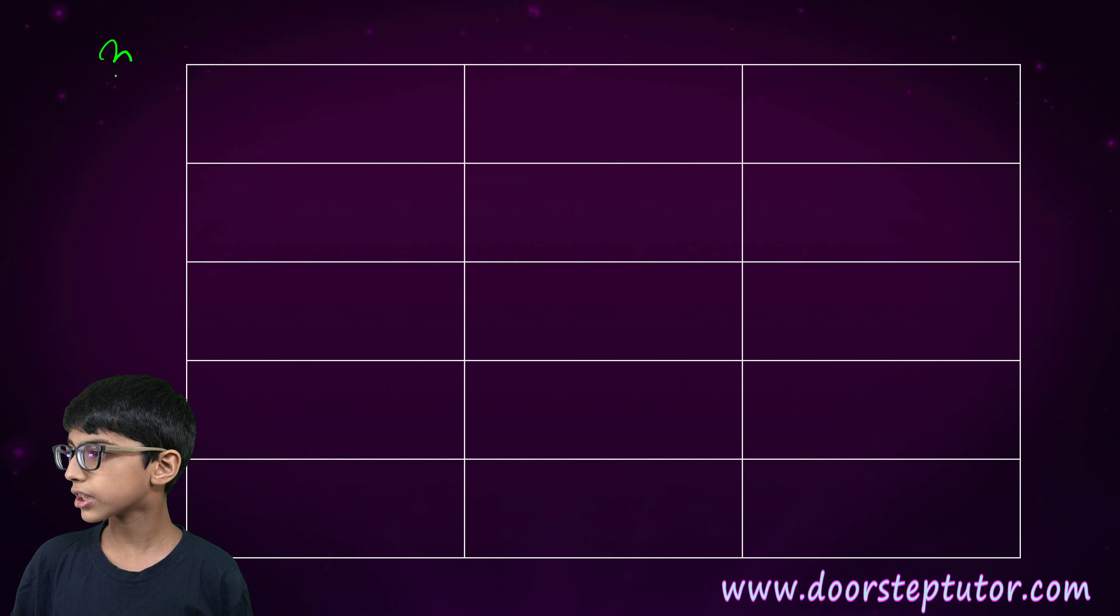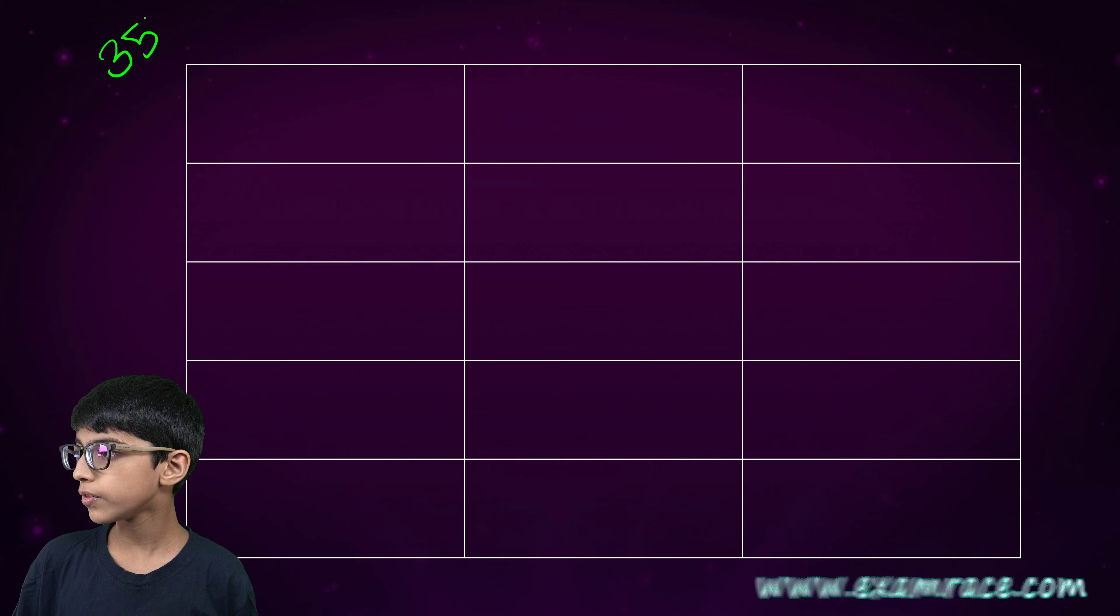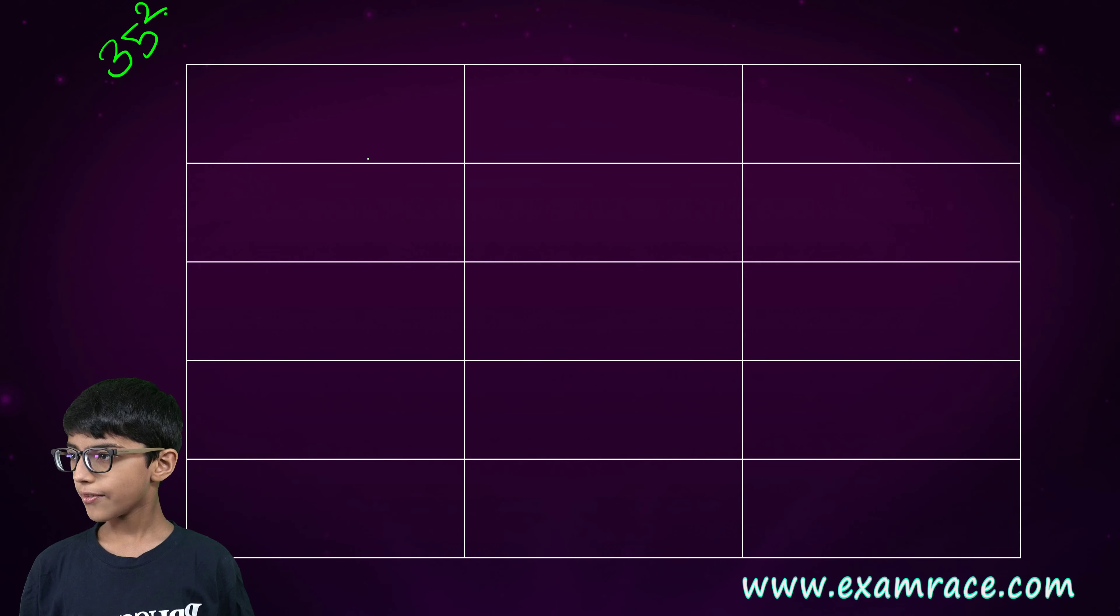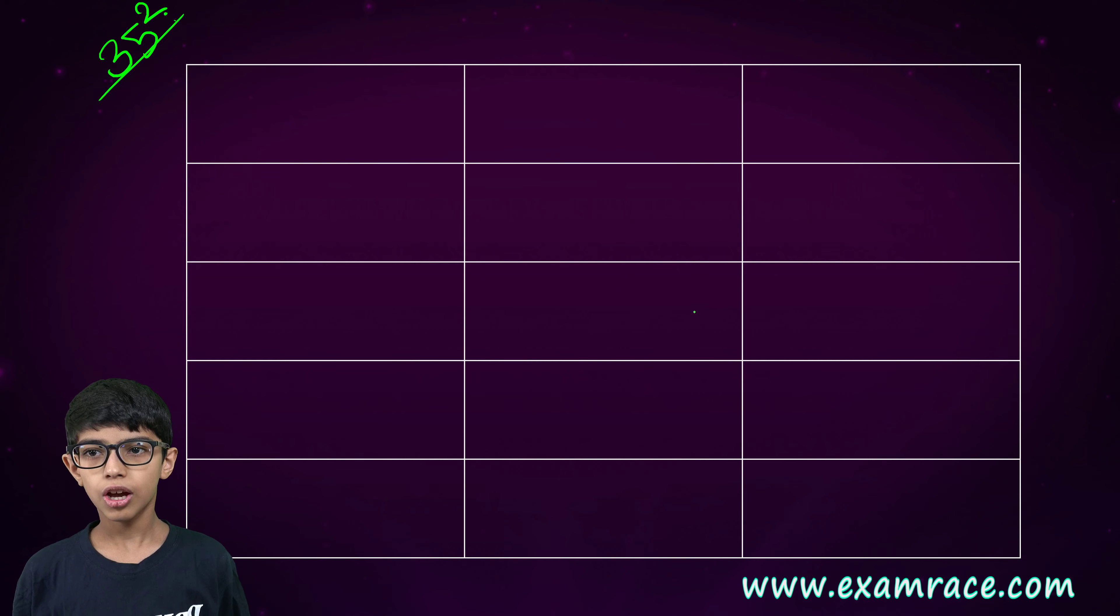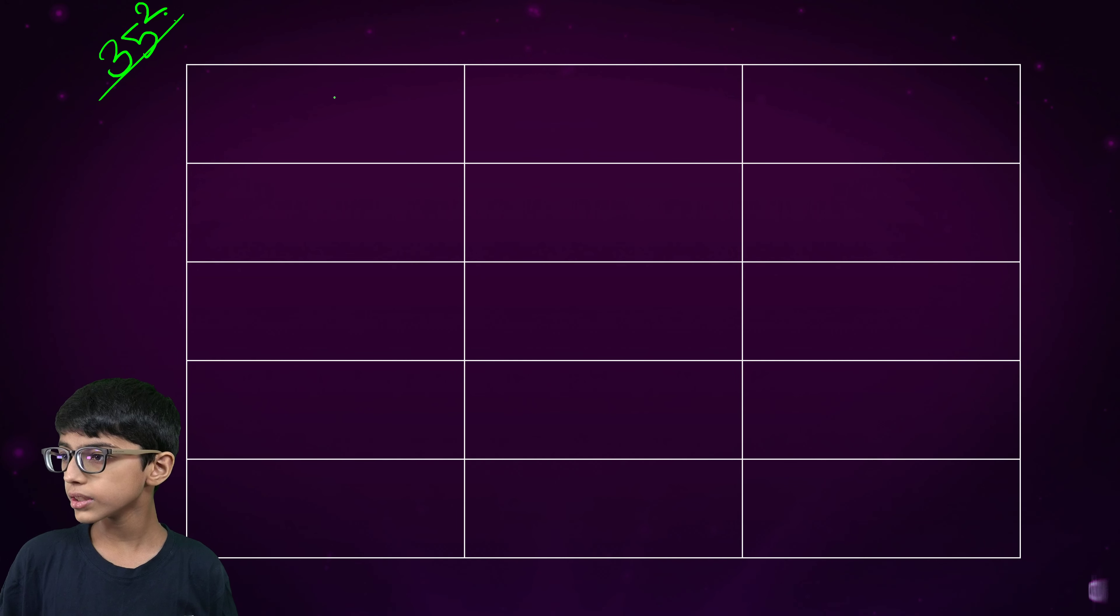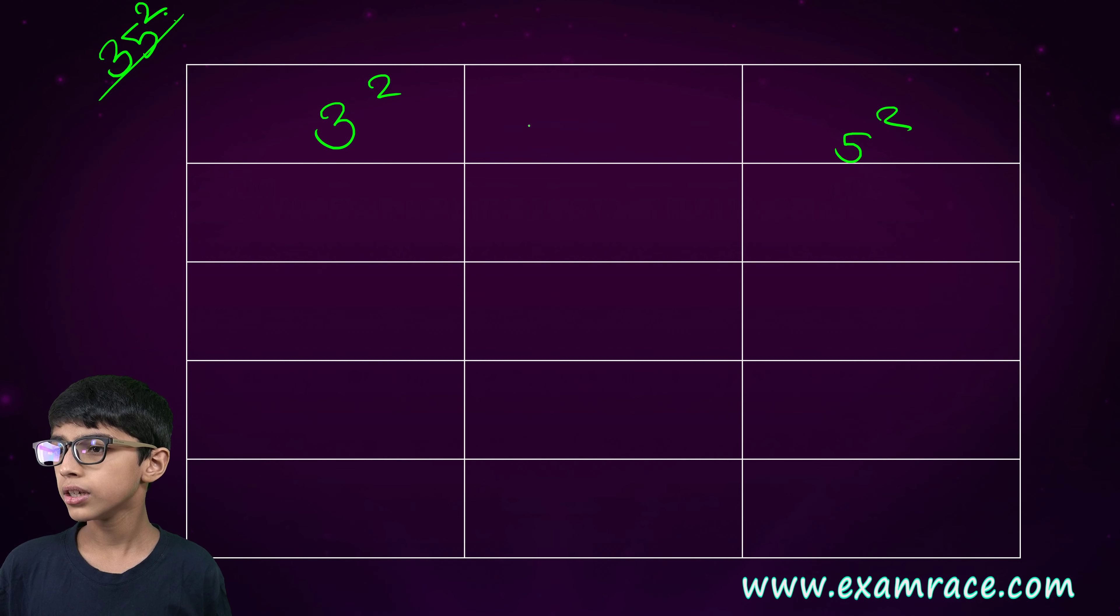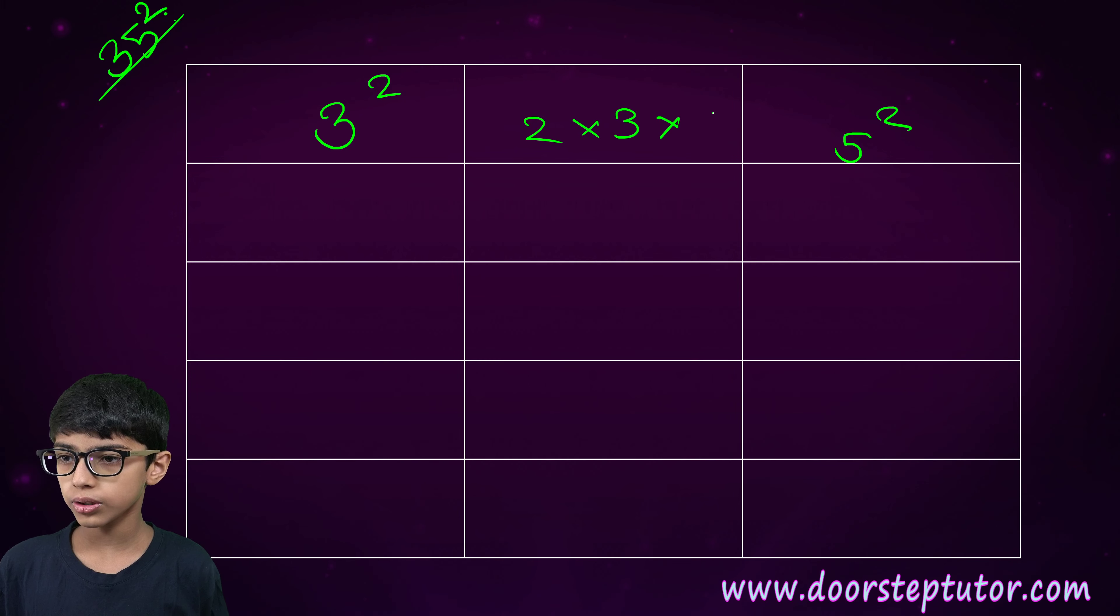Next is thirty-five square. We can do this with the eka dikhena purvena suthya also. So, now, three square, five square, two into three into five.